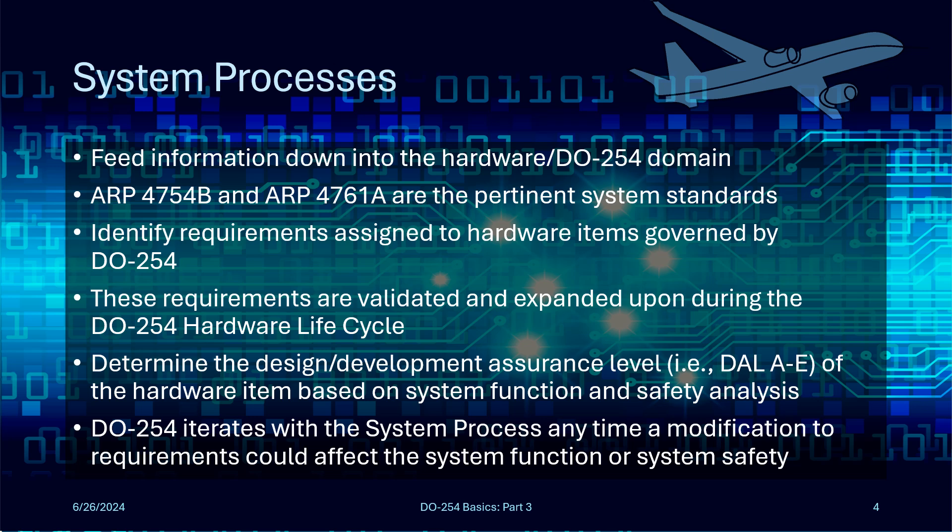Those are the arrows that point in from the system processes to DO254, but if you look closely at Figure 5-1, you'll also see an arrow that points from hardware back to system. This is because any time the hardware requirements change — and they likely will during the design process — these changes have to be reviewed back at the system level to ensure they are understood, accepted, and don't have an adverse safety impact.